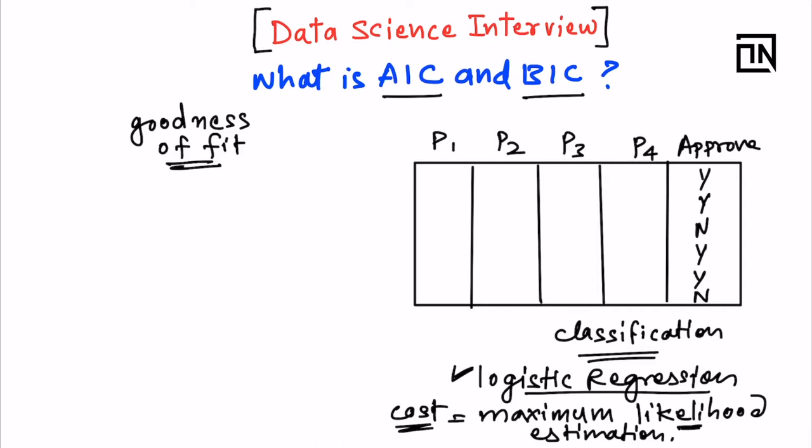So based on this log likelihood, the AIC and BIC is computed, just like in your linear regression you compute R squared value based on your sum of squared errors and the total variance. Here, based on the likelihood or the log likelihood, you compute AIC and BIC and you choose that model, that logistic regression model, which has the lowest AIC or lowest BIC.